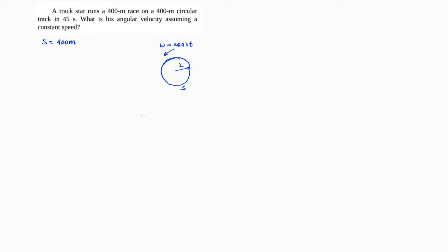The circumference S is equal to 400 meters and he runs this track in 45 seconds, so the period T equals 45 seconds. We know the relationship between tangential velocity and angular velocity: V equals omega times R, so omega equals V divided by R.